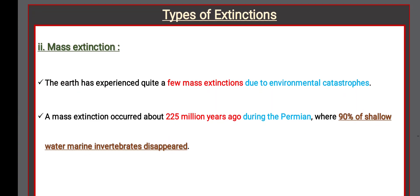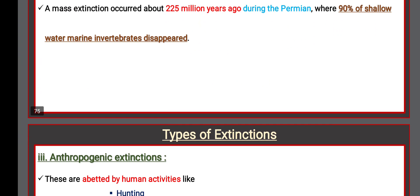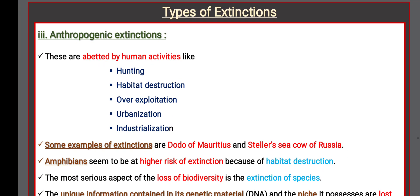The second type is Mass Extinction. The Earth has experienced quite a few mass extinctions due to environmental catastrophes. A mass extinction occurred about 225 million years ago during the Permian period, where 90% of shallow water marine invertebrates disappeared.